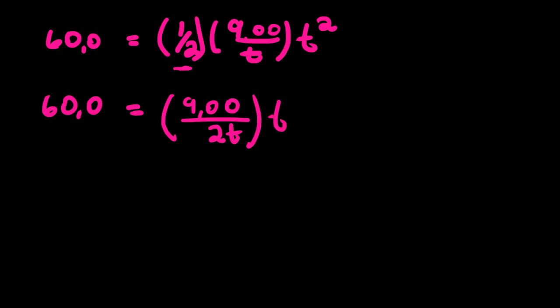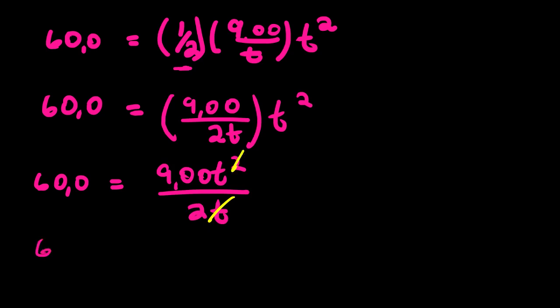Let us start with this. We have one multiplied by 9.00, that's 9.00, and then two multiplied by t we have 2t. We still have the whole number here. 60.0 equals a whole number multiplied by a fraction. We simply take the whole number multiplied by the numerator, so we are going to have 9.00 t squared over 2t. In this case we are going to have t divided by one of the t's.